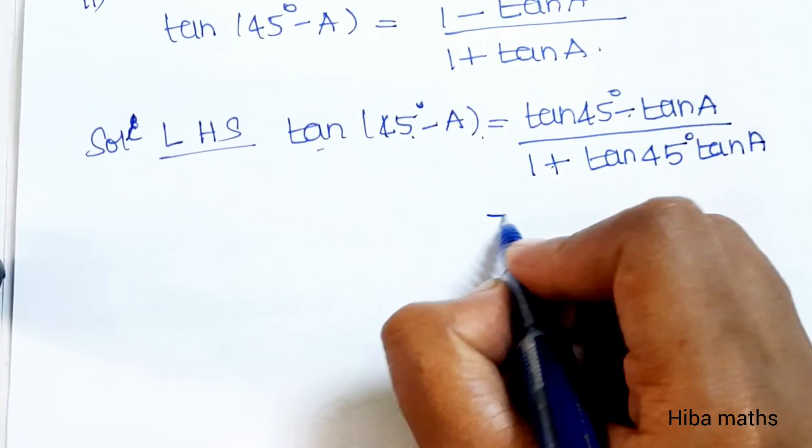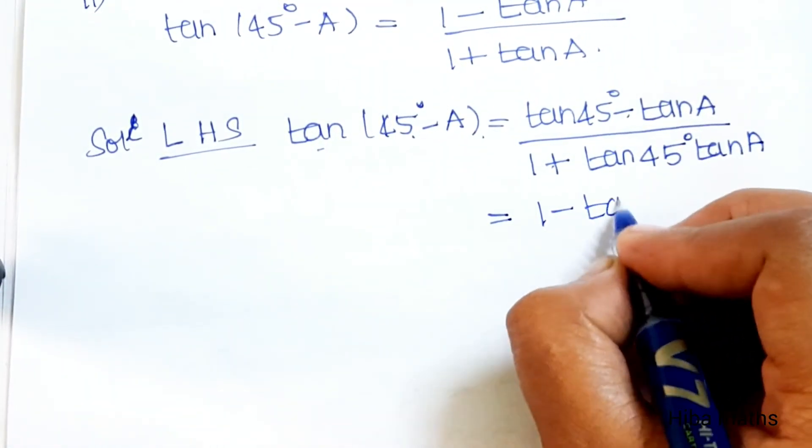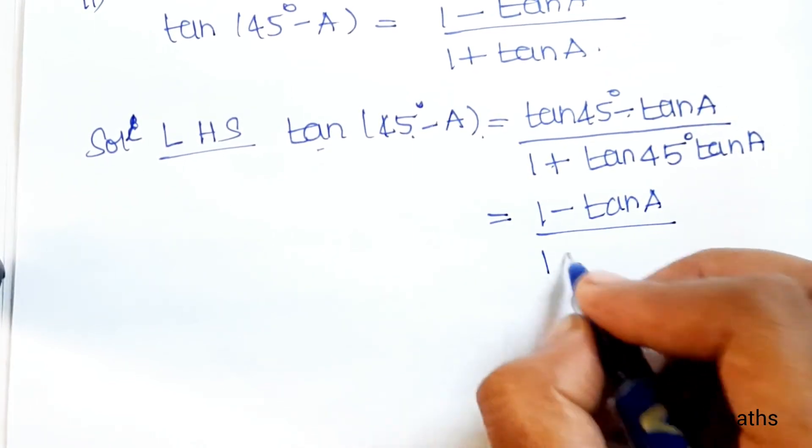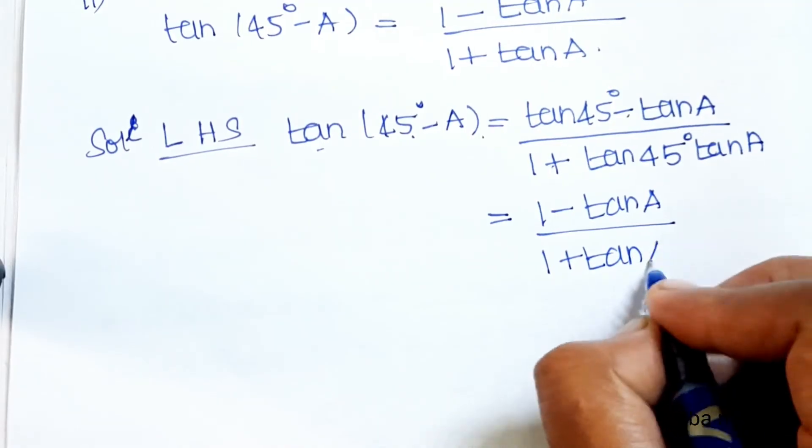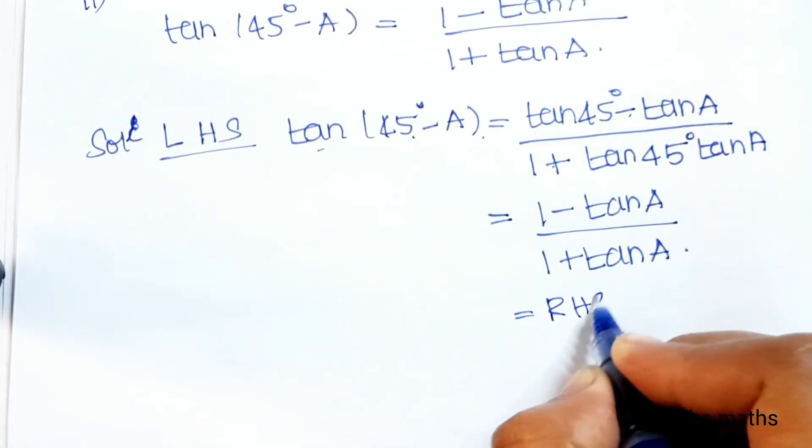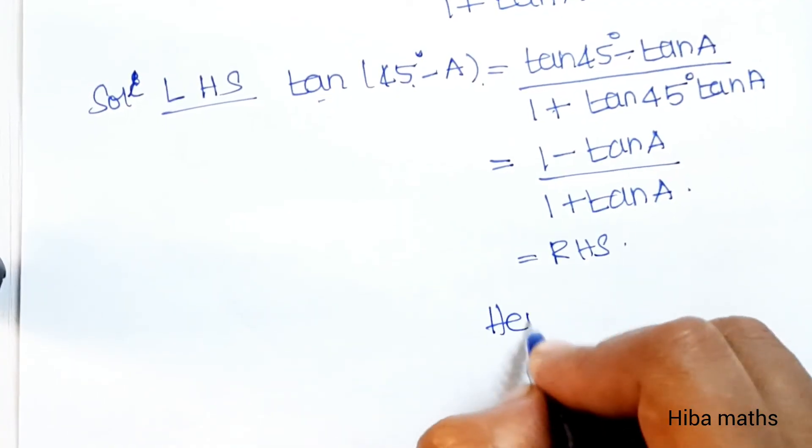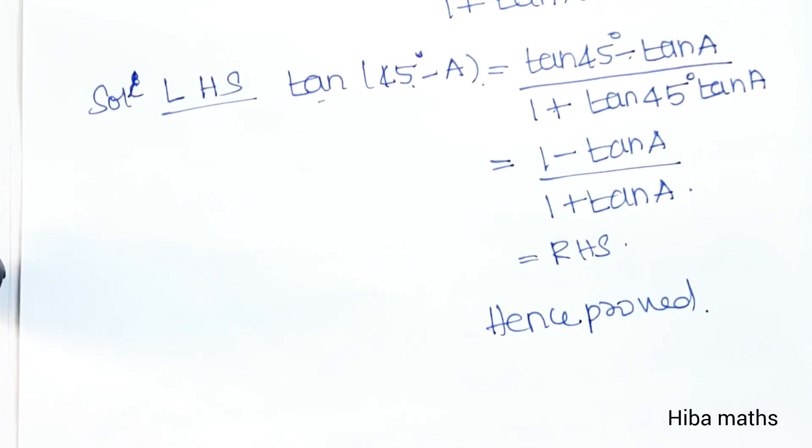Substituting: (1 - tanA) divided by (1 + 1·tanA) = (1 - tanA) divided by (1 + tanA). This is very important, the trigonometric ratio. This is very important.